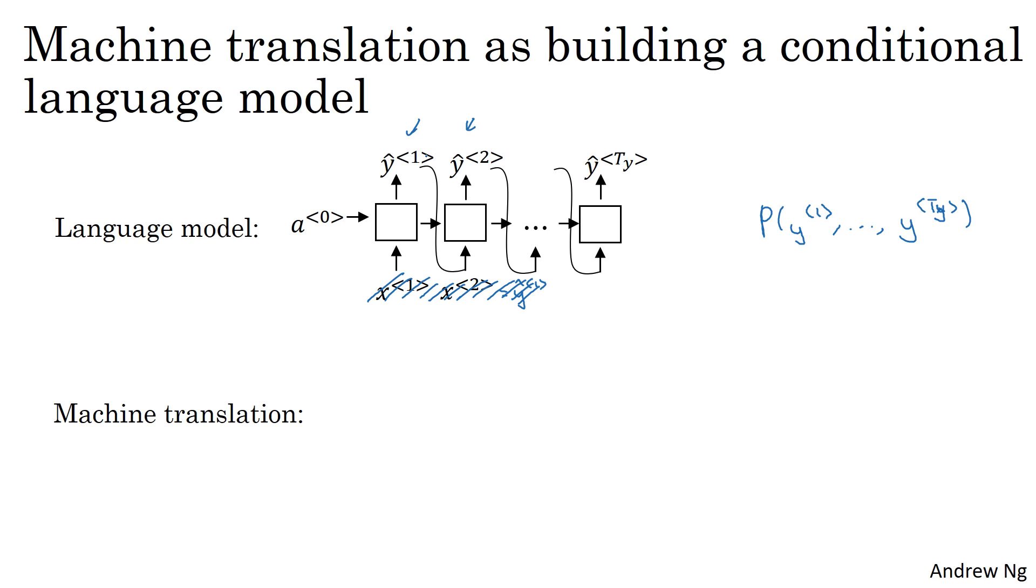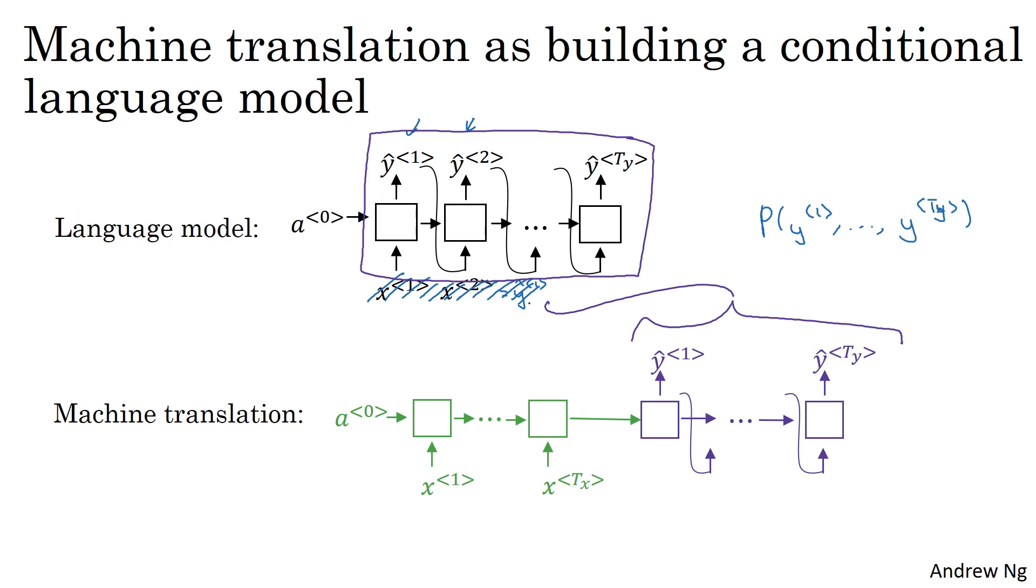The machine translation model looks as follows. I'm going to use a couple of different colors, green and purple, to denote respectively the encoder network in green, and the decoder network in purple.